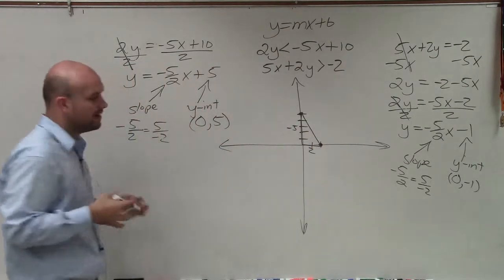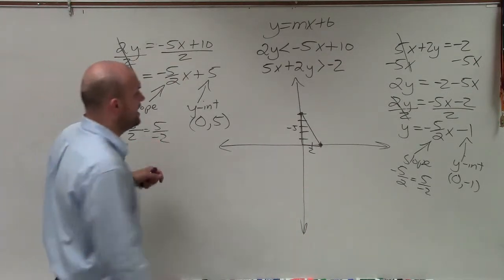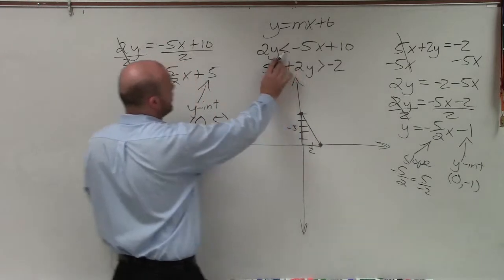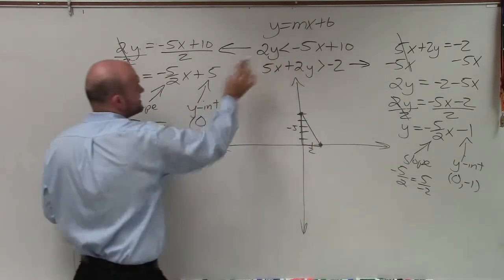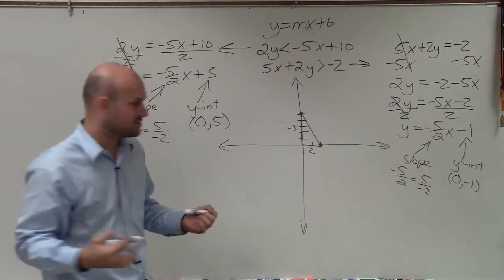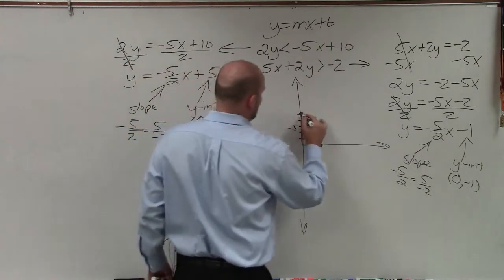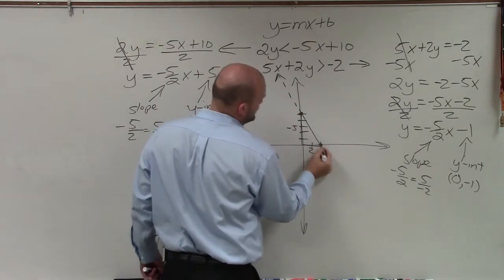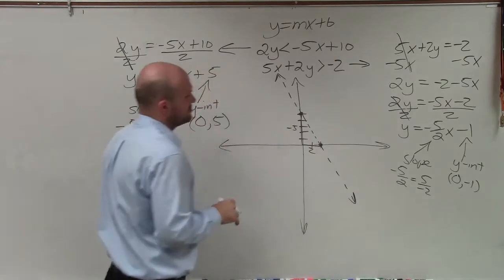Now I'm going to connect those, but we don't really know is our boundary line going to be dashed or solid. And you can see from our inequality, which I transferred over here, you can see that our line is actually less than, not less than or equal to. So therefore, our graph is actually going to be a dashed line. So I don't want to confuse you by using that slope triangle, but that's actually going to be a dashed boundary line.